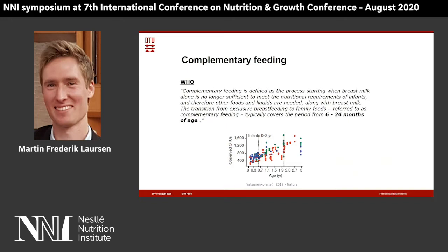At some point we transition away from breastfeeding. This transition from breastfeeding to family foods is normally referred to as the complementary feeding period, and it typically covers the period from 6 to 24 months of age. This is a very interesting period in terms of microbial development, as this is a phase where we see a rapid increase in the number of different detected bacterial species in the gut.